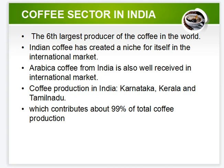Coffee section in India: India is the sixth largest producer of coffee in the world. India's coffee has created a niche for itself in the international market. Arabica coffee from India is also well received internationally. Regarding coffee production in India, Karnataka is the main producer, followed by Kerala and Tamil Nadu, which together contribute about 99 percent of the total coffee production.